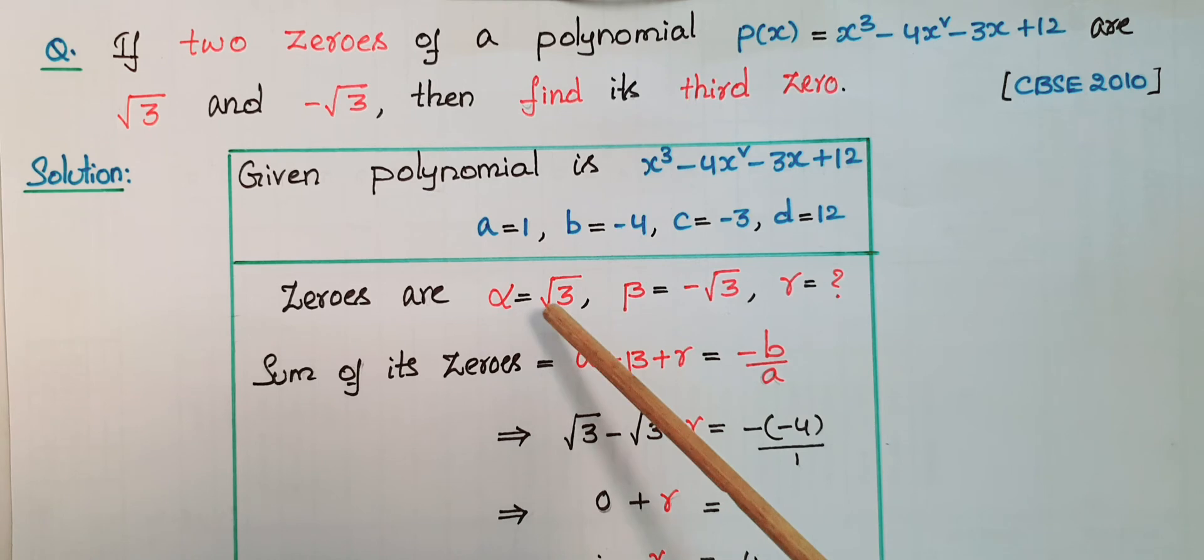Substituting the values: √3 + (-√3) + γ = -(-4)/1. So √3 - √3 + γ = 4.